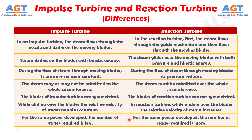Number 7: For the same power developed, the number of stages required in impulse turbine is less. Whereas, in reaction turbine, the number of stages required is more.